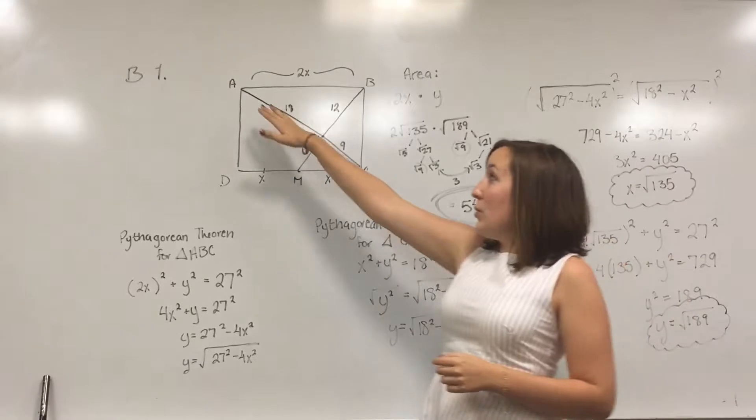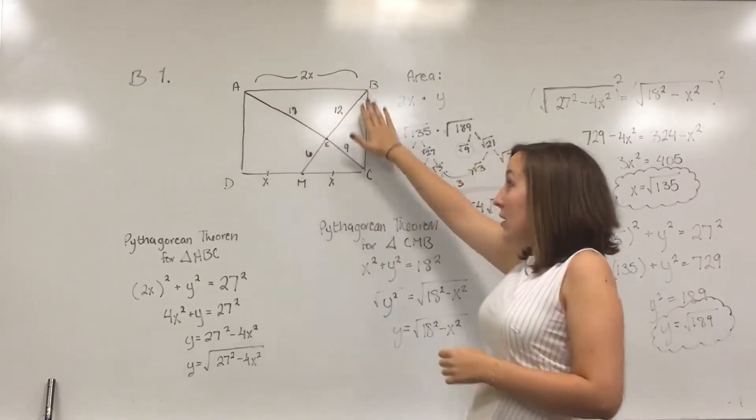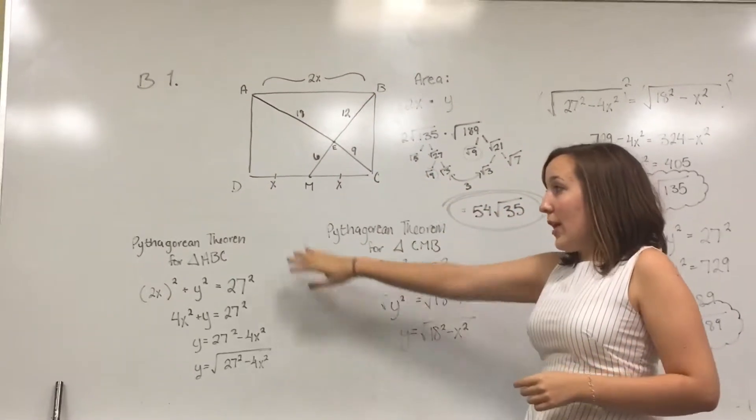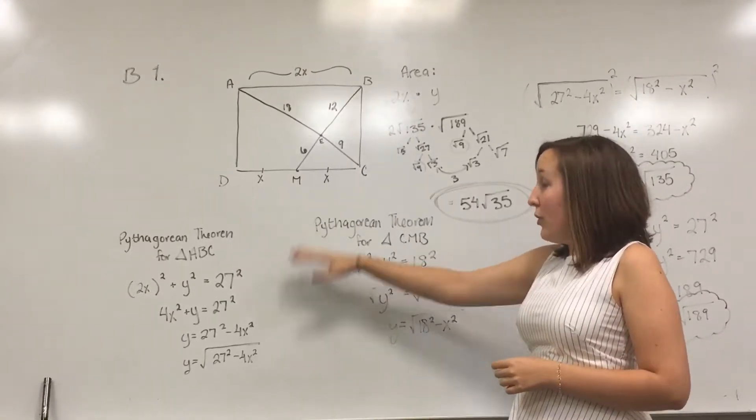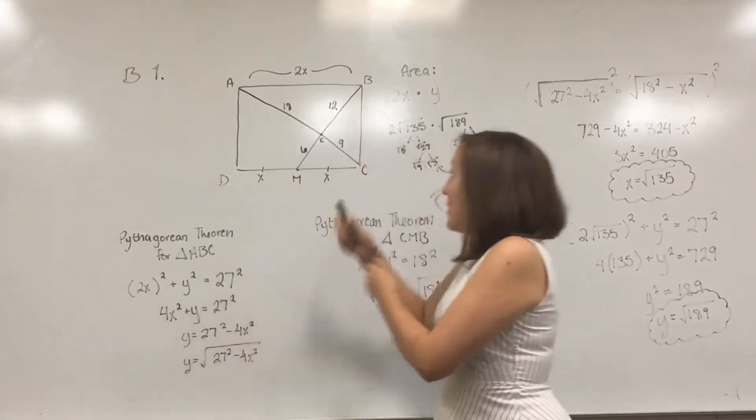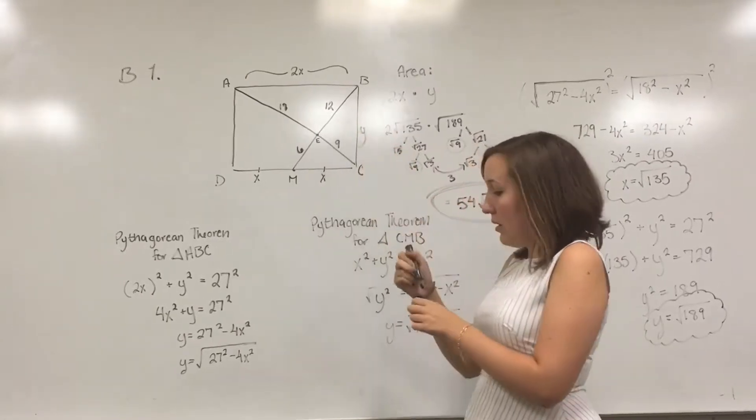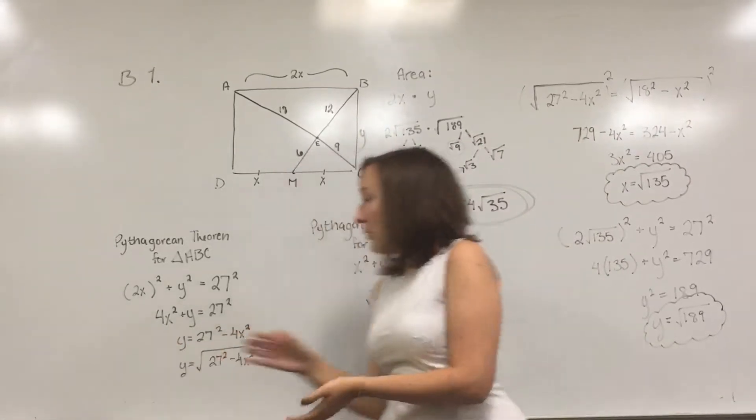So using those, we can look at some other triangles that we have going on in there. So we can use this one here, I labeled it ABC, and then I use the Pythagorean theorem for that to be able to find y, which is what I label as this side here.